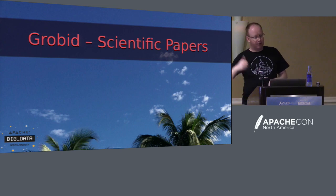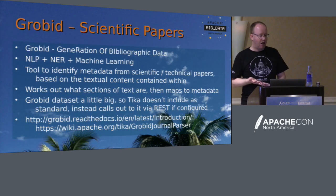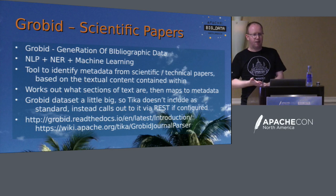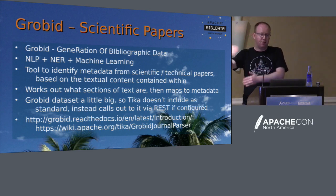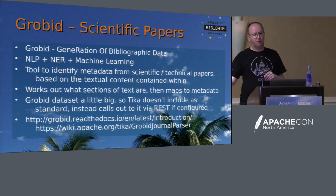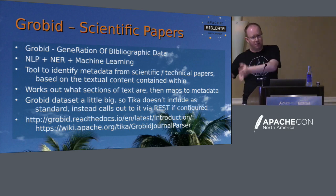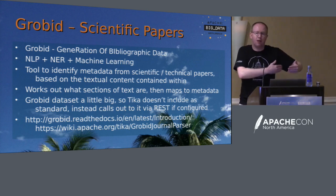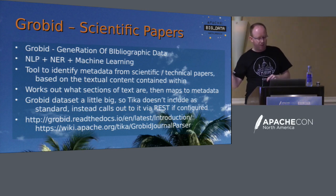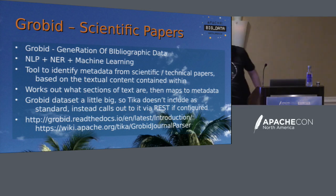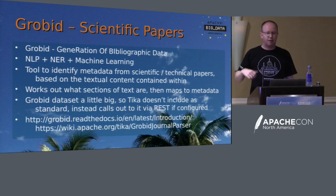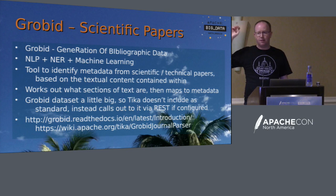One specific batteries-included version of this is Grobid, which is aimed at scientific papers. It's based on natural language processing, named entity recognition, machine learning, and a hefty training data set. The idea is that you can give it a PDF of a scientific paper and it knows how to pull out the citations, the authors, the titles — all that kind of stuff as metadata, so you can give it a PDF and back will come all that information available for you to index and search on. That's all done via a REST API because the size of the training data set was too big.